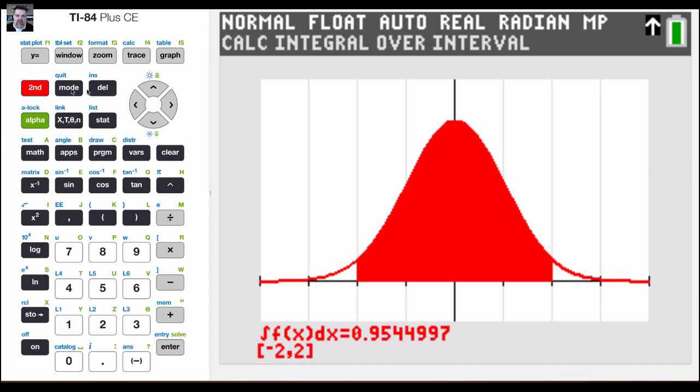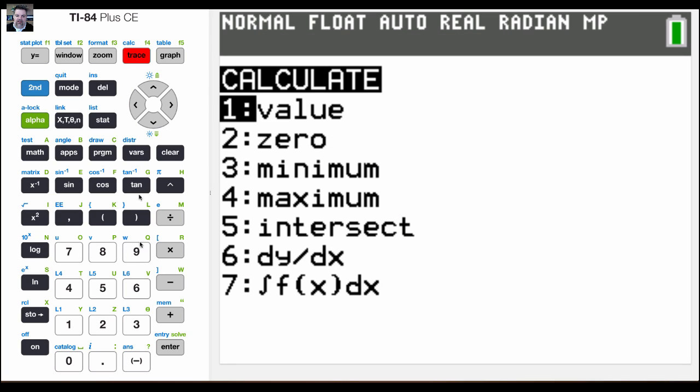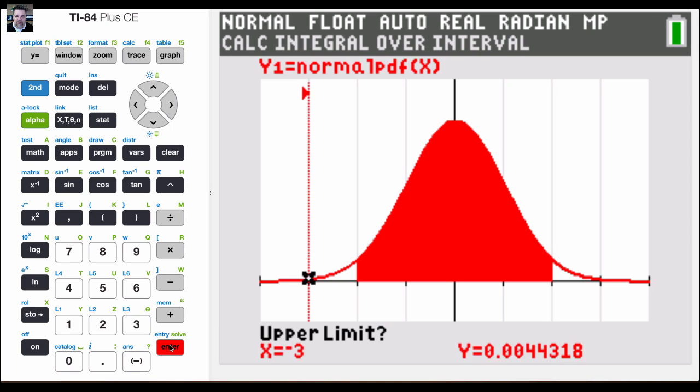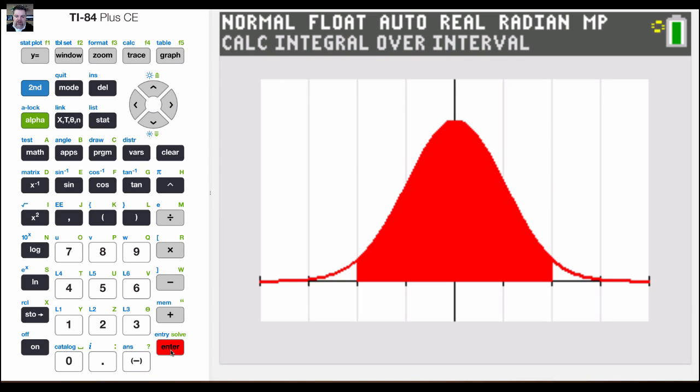We could do that one more time and hit second trace. And if I choose option number seven, and we go from negative three to positive three, that should be 99.7. And it is 0.997 or 99.7% of the area under the curve. And so that's how you would find the distribution or the probability based on standard deviation.